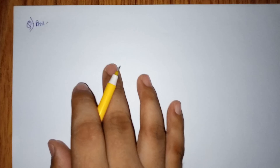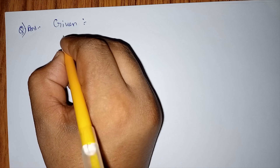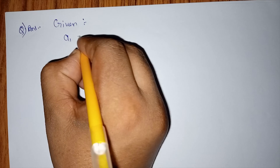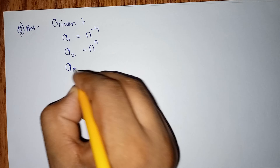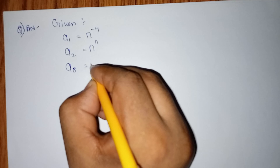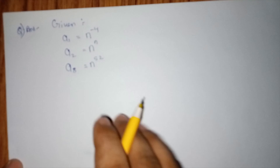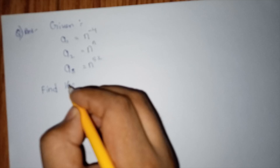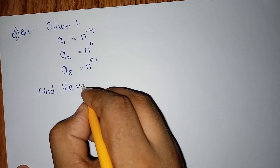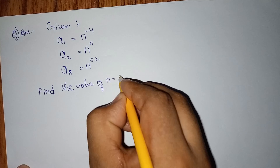So what is given? The first term of the GP, let us call it a1, is n to the power minus 4. The second term of the GP is n to the power n. And the eighth term of the GP is n to the power 52. We need to find the value of n.